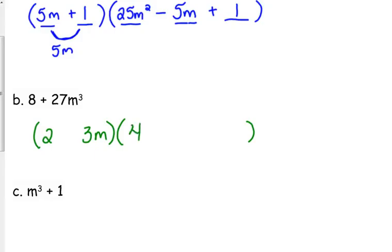Square the 2. That goes in the first spot. Square the 3m. That goes in the last spot. 9m squared. Multiply those two together. That gives us 6m. That goes in the middle. Same, opposite, always positive. Positive, negative, positive.